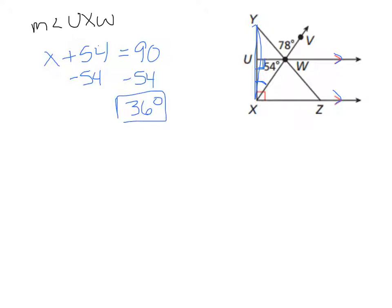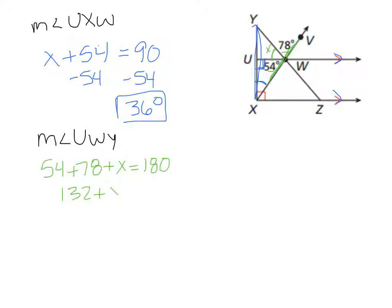We also had to find the measure of angle UWY, which is this little angle right here. I'm going to use the idea of a straight angle — a straight angle is 180 degrees. Looking at what I know, I know most of that straight angle and I'm just missing this unknown one. So 54 plus 78 plus the missing angle adds up to 180. That gives 132 plus the missing angle equals 180, and subtracting 132 from both sides gives us the missing angle of 48 degrees.